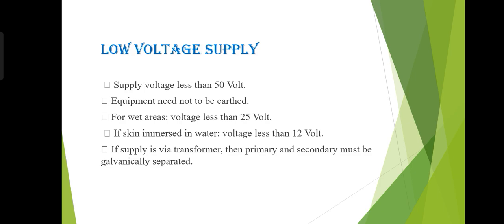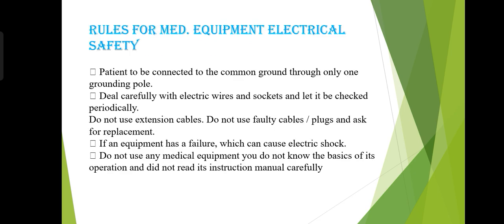Let's see a brief overview of low voltage supply. Supply voltage less than 50 volts — equipment need not be earthed. For wet areas, voltage must be less than 25 volts. If skin is immersed in water, voltage must be less than 12 volts. If supply is via a transformer, the primary and secondary must be galvanically separated.